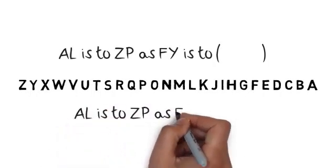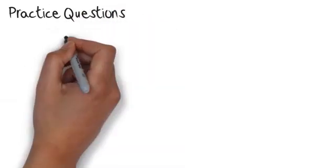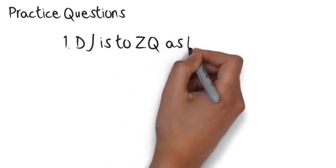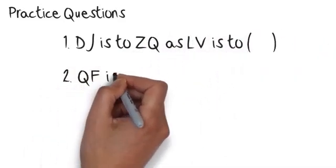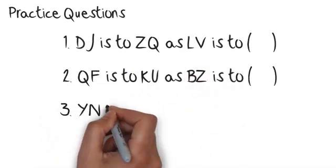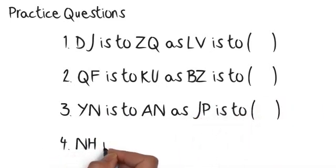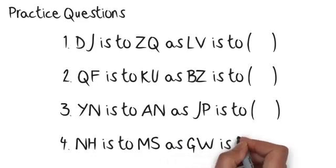Practice questions. Number one: D-J is to Z-Q as L-V is to. Number two: Q-F is to K-U as B-Z is to. Number three: Y-N is to A-N as J-P is to. Number four: N-H is to M-S as G-W is to.